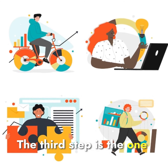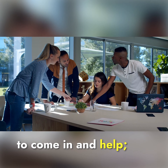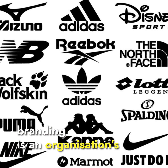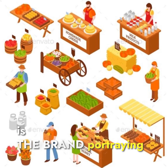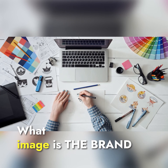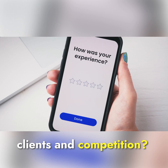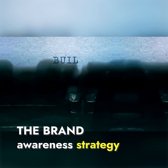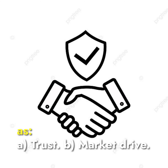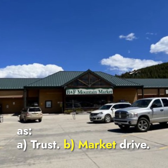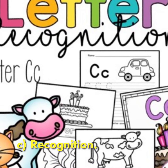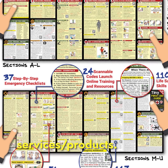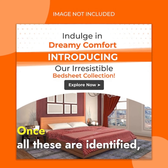The third step is where your marketing and communications team need to come in and help. Now you have to package the brand. At its core, branding is an organization's identity in the marketplace. Is the brand portraying what it should? What image is the brand conveying to its potential clients and competition? What are the benefits in using the brand? It is therefore critical that the brand awareness strategy should address key features such as: A. Trust. B. Market drive. C. Recognition. D. Unique features. E. Clear positioning. F. Pre-emptive services and products.